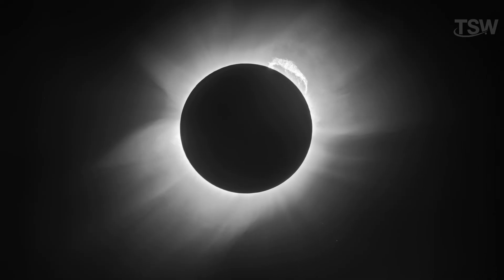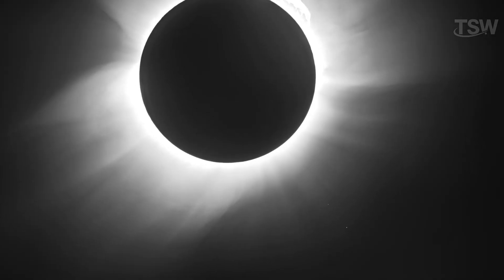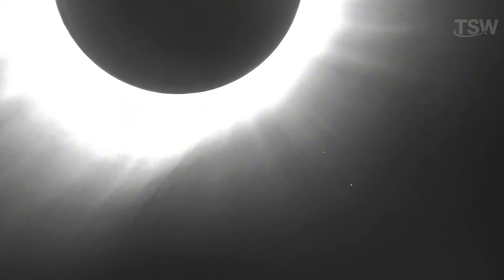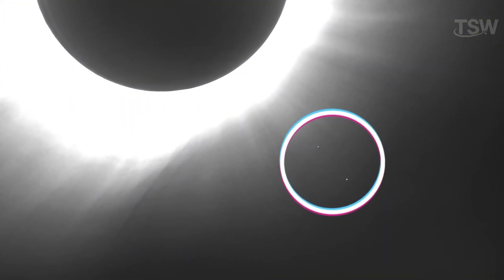When the results were analyzed, the answer was clear. The light from the stars had indeed been deflected as it passed near the Sun, exactly as Einstein had predicted. General relativity was confirmed.